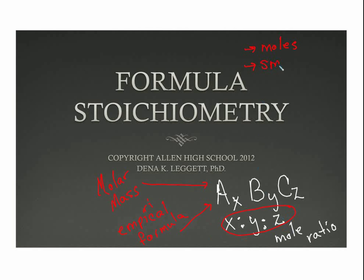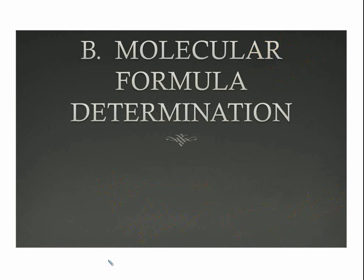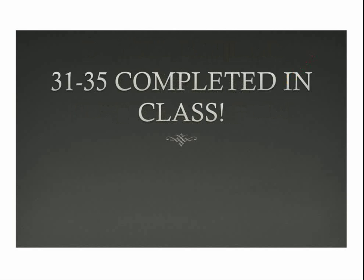What can happen is that you can end up with fractions when we do these. And X, Y, and Z have to be a whole number ratio. So we're going to have to find a way to get those to whole numbers. That will be our ultimate goal. And then we can add a second step to get that actual molecular formula.